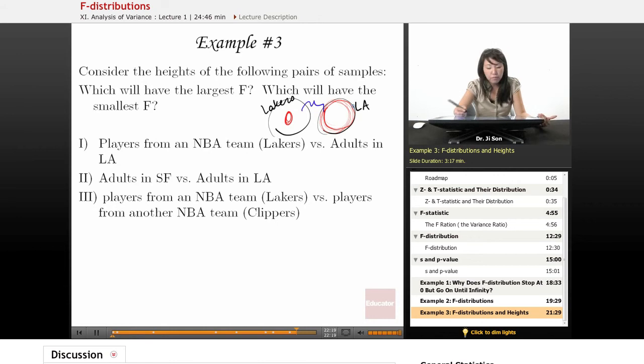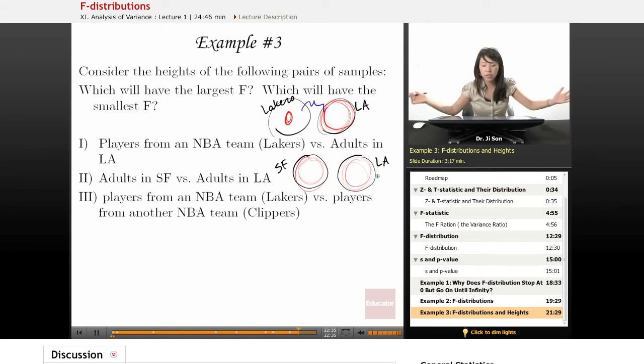Will this have a large F? Will it have a small F? I don't know. Not yet. Well what about adults in San Francisco versus adults in LA? Well these two probably both have a lot of within sample variation. There's lots of adults in San Francisco, lots of adults in LA, they're all different from each other.